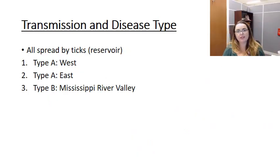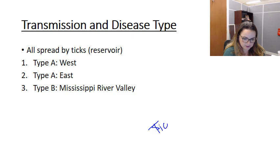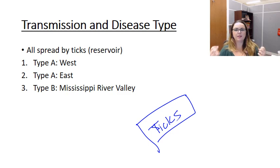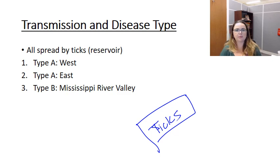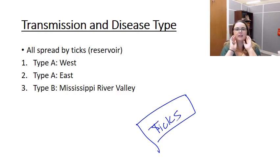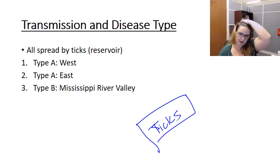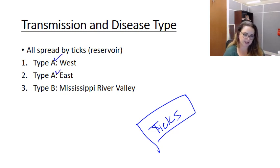There are three types of tularemia, all spread by ticks. The tick bite is the most common reservoir. The tick becomes infected, and then its salivary glands need to become infected, after which the tick deposits the organism back into the host, leading to infection of the human. We have three types: type A West, type A East, and type B, which occurs in the Mississippi River Valley.